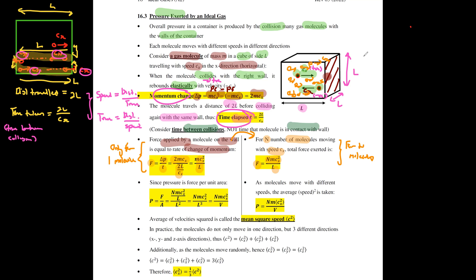Now find the pressure exerted. Pressure is force per unit area from AS. Dividing total force NmCx²/L by the area L² (since it's a cube), you get NmCx² divided by L³. Since L³ is the volume V, the pressure is NmCx² divided by V.